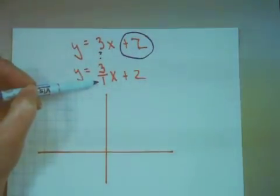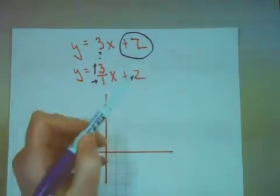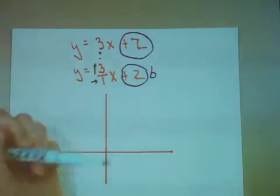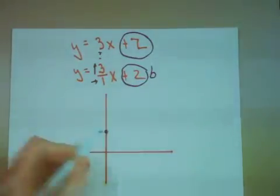3 over 1 will give me that idea of the rise over run. So my b value hasn't changed. My b value is still positive 2. So from the origin, I'm going to go up 1, 2, put a big fat dot.